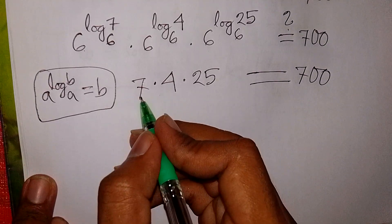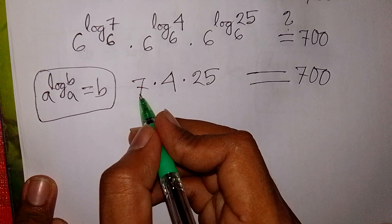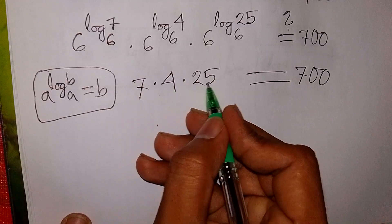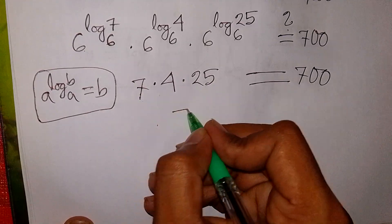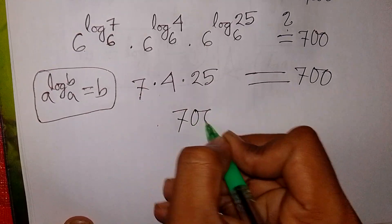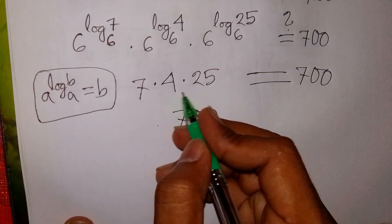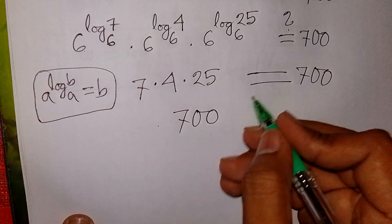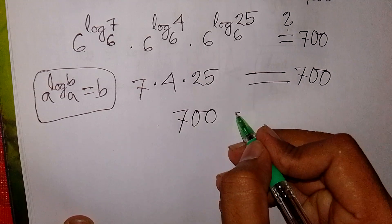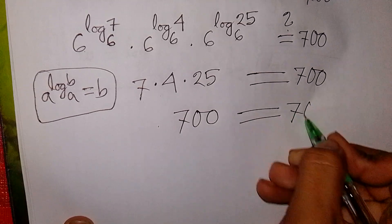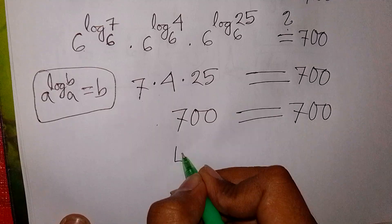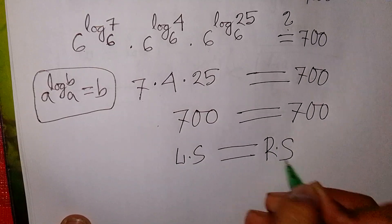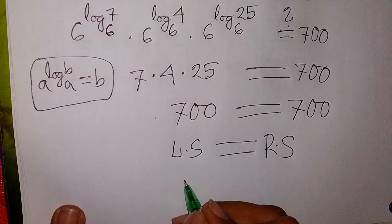So we get 7 times 4 times 25. Now 4 times 25 equals 100, so 100 times 7 is the same as 700. Therefore 700 is equal to 700, left side equals right side, and the value of x has been verified.